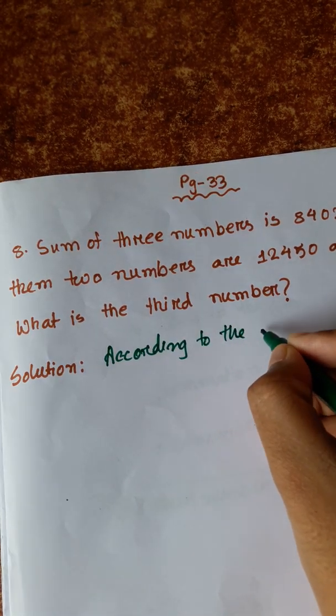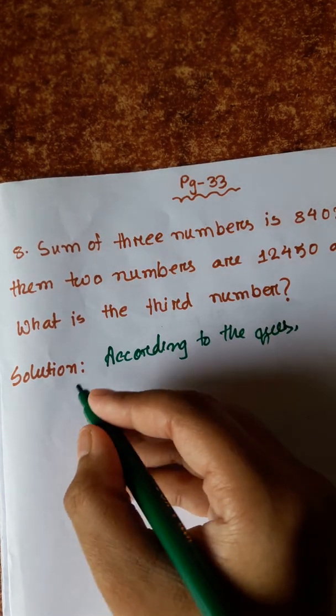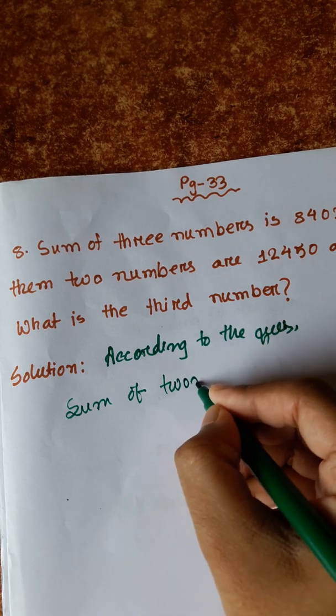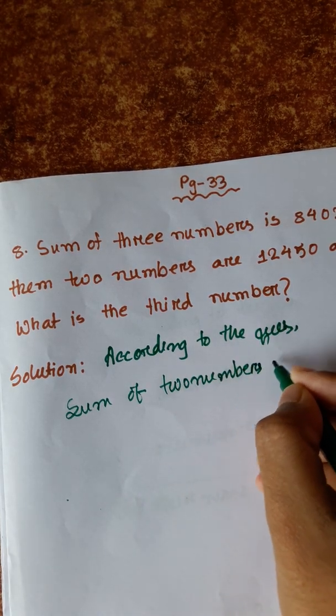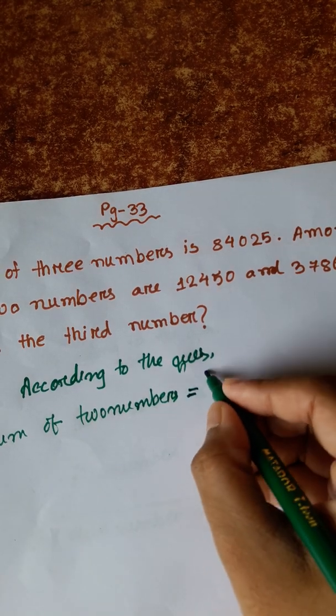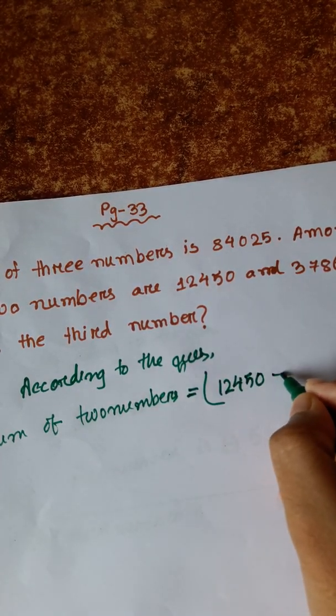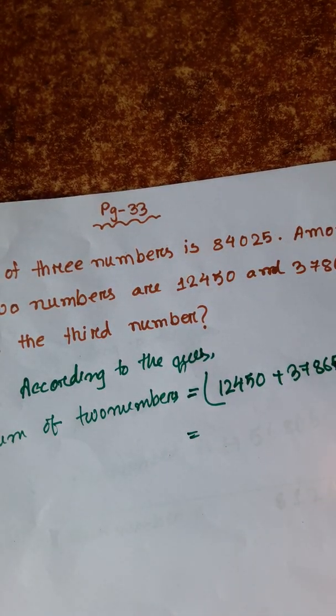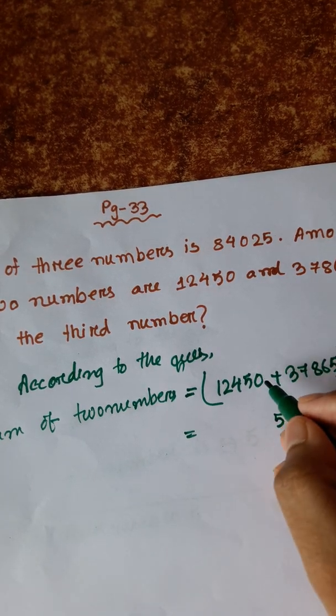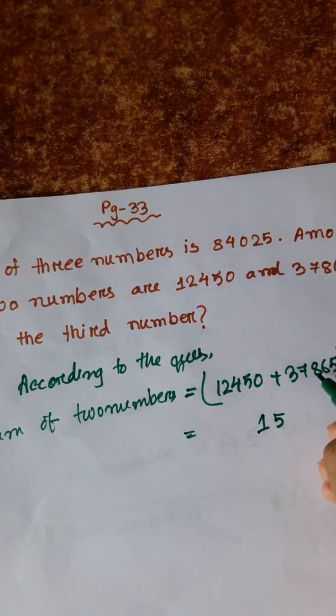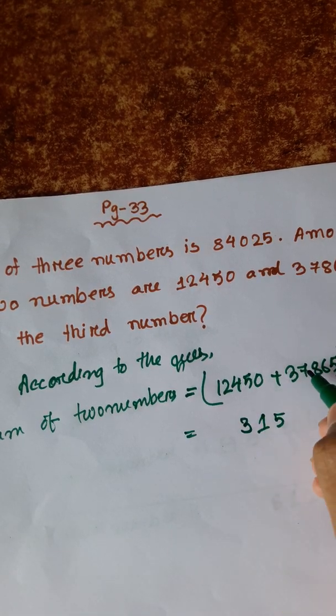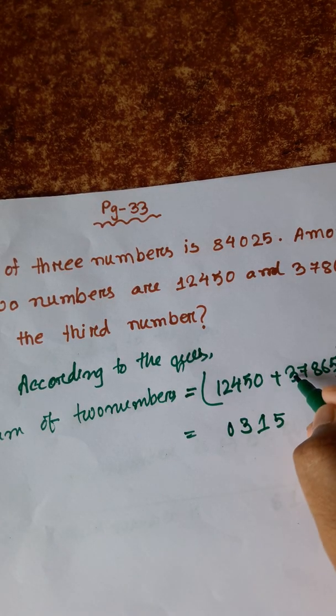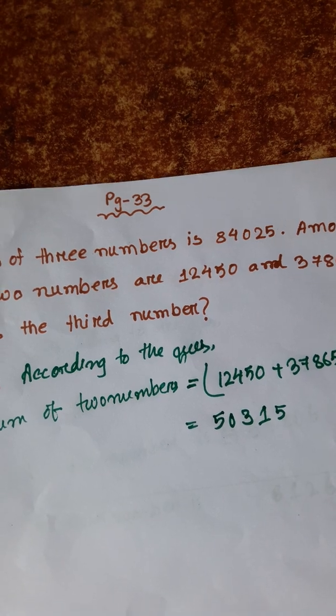According to the question, sum of 2 numbers equals 12,450 plus 37,865. So we calculate: 5 plus 0 is 5, 6 plus 5 is 11 write 1 carry 1, 8 plus 1 is 9 plus 4 is 13 write 3 carry 1, 7 plus 1 is 8 plus 2 is 10 write 0 carry 1, 3 plus 1 is 4 plus 1 is 5. The answer is 50,315.